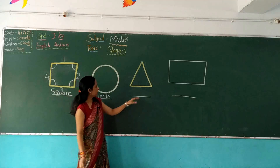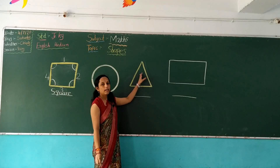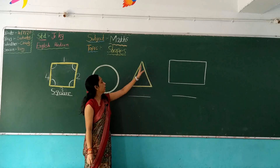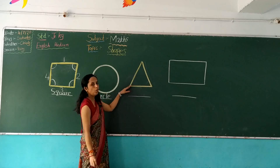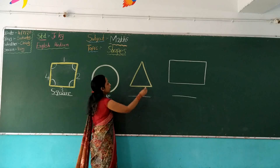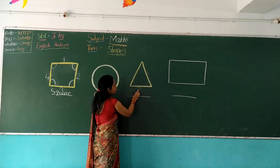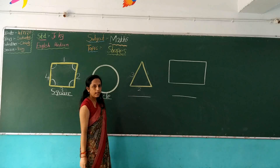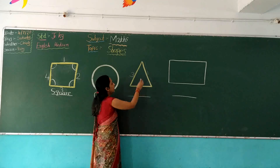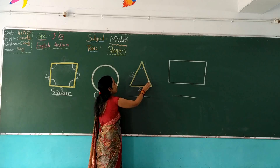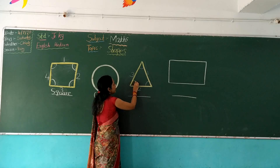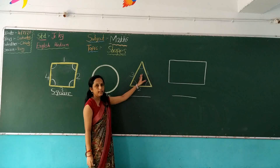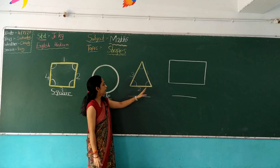Our third shape is triangle. It has 3 sides: 1, 2, 3. And it has 3 corners: 1, 2, 3. Which shape is this? This is a triangle.